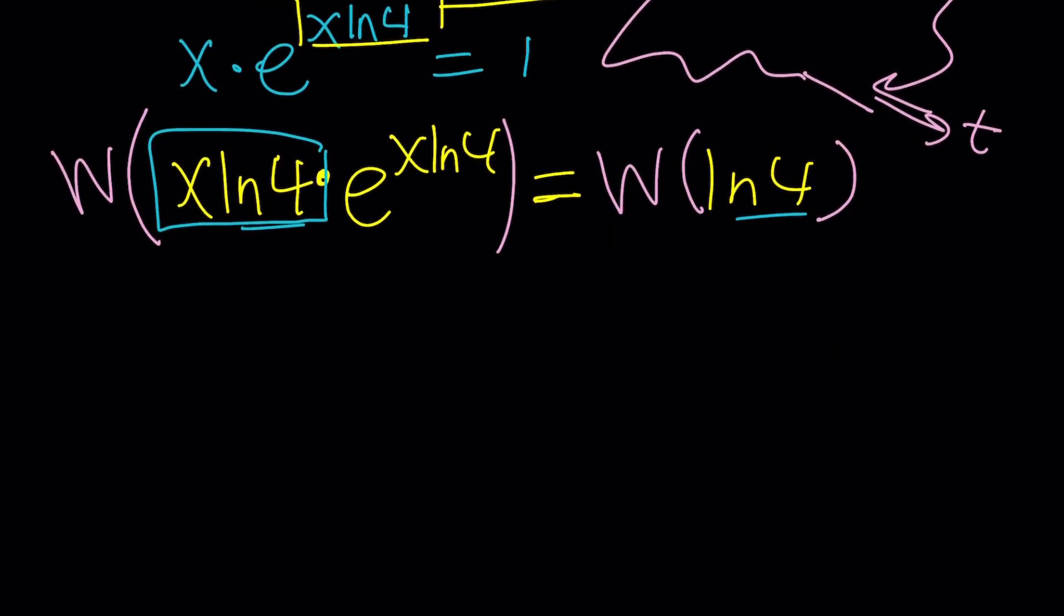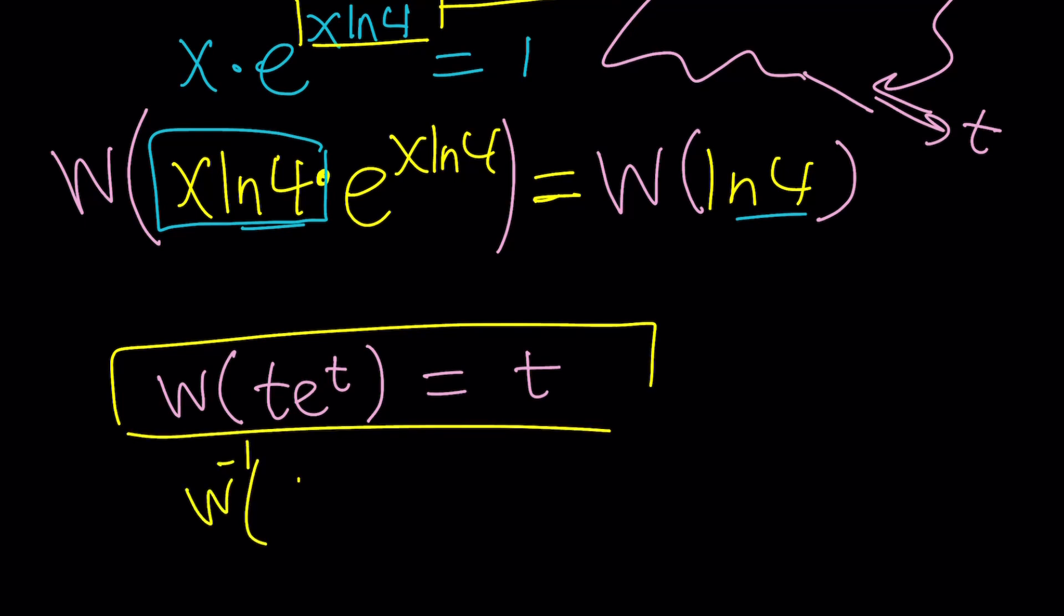But we could also write it as follows. Suppose if you apply Lambert's w on t e to the t, you get t. It's that simple. That's the definition. And you can also think of this as the inverse function for t e to the t, because if you invert it, you're going to get that. Make sense? Cool.